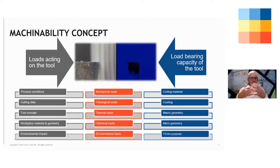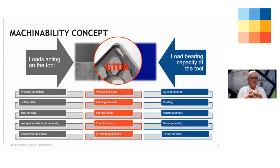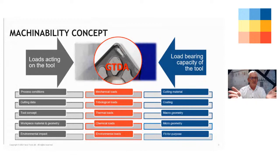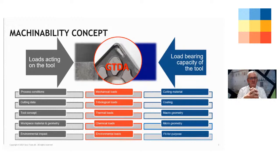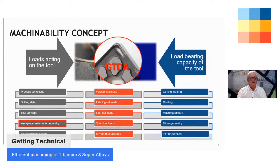To know if we manage to find balance in machinability, there is a very straightforward, simple method. The saying goes: if you look at a used tool and you know what to look for, the tool will tell you if there was balance during the process or not. At Seco, we developed a more systematic approach to this concept, which we refer to as GTDA — Global Tool Deterioration Analysis. Analyzing used tools in a systematic way teaches us a lot about whether we managed to have the machinability correct.